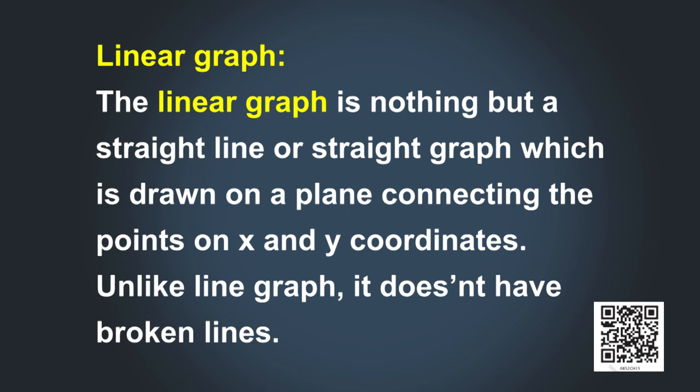Linear means straight, and a graph is a pictorial representation of data in an organized manner. A linear graph is a straight-line graph drawn on a plane connecting points on x and y coordinates. Unlike a line graph, it does not have broken lines.